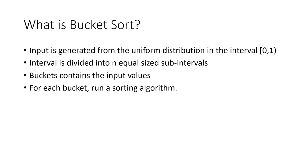So what is bucket sort? In bucket sort, we make a few assumptions which make it fast. The assumption is that the input comes from 0 to 1, and the input from 0 to 1 will be uniformly distributed across n equal-size sub-intervals. Each value is placed in a bucket depending on a hash function.